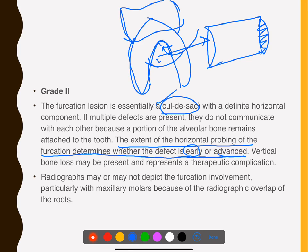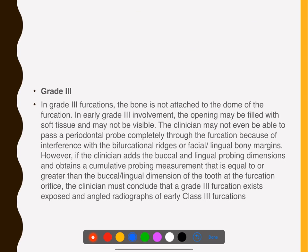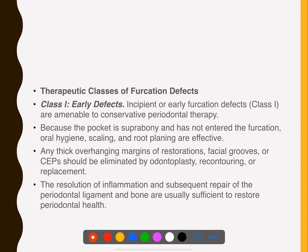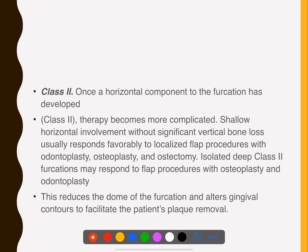Treatment for furcation defects: Grade 1 (early defects) — because the pocket is suprabony and has not entered the furcation, oral hygiene, scaling, and root planing are effective. Thick overhanging restorations should be recontoured or replaced. For Grade 2, odontoplasty, osteoplasty, and osteectomy procedures are performed for the horizontal component that has now developed.